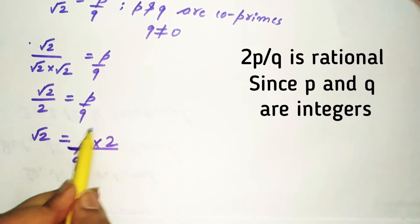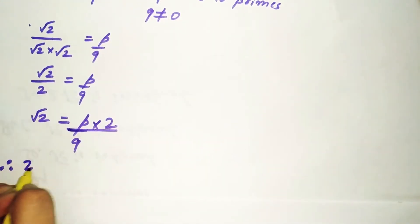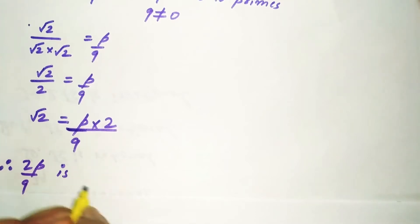We know that 2P divided by Q is a rational number, because it can be expressed in P by Q form.